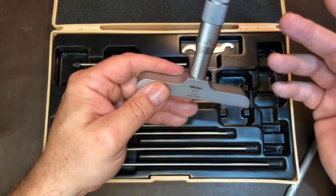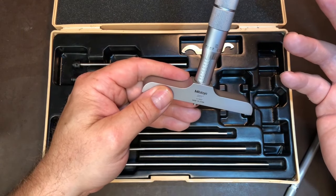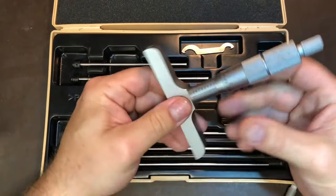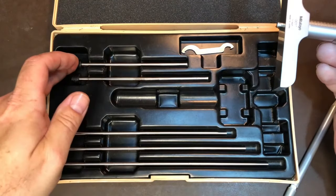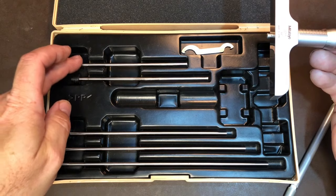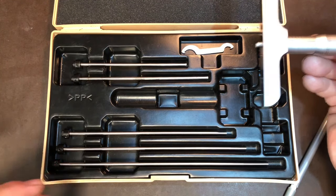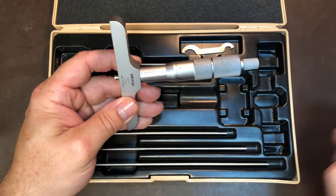What we have in this case is a zero to six inch set. So if we take a look, the rod in this one is a zero to one, then this rod here would be a one to two, two to three, three to four, four to five, and five to six. So you have your different various size rods.